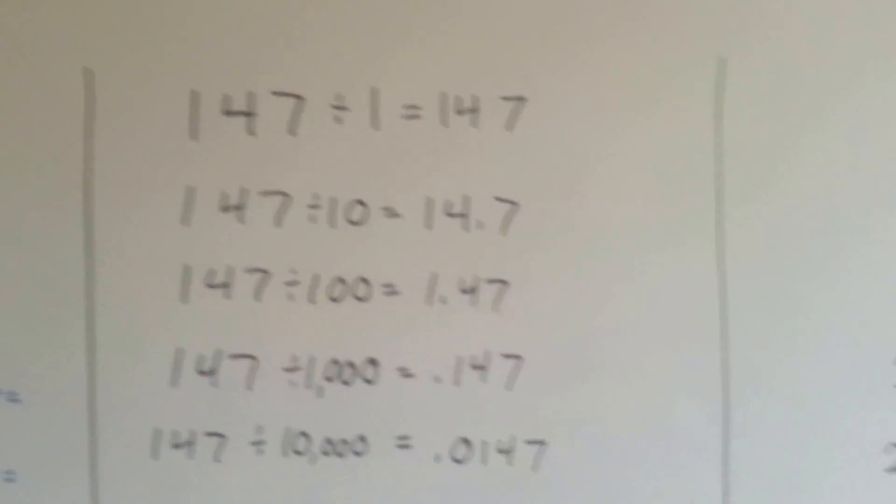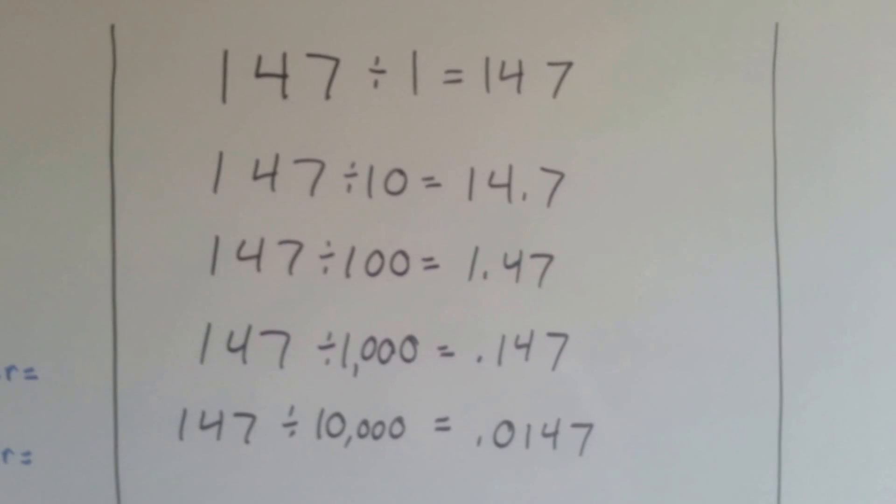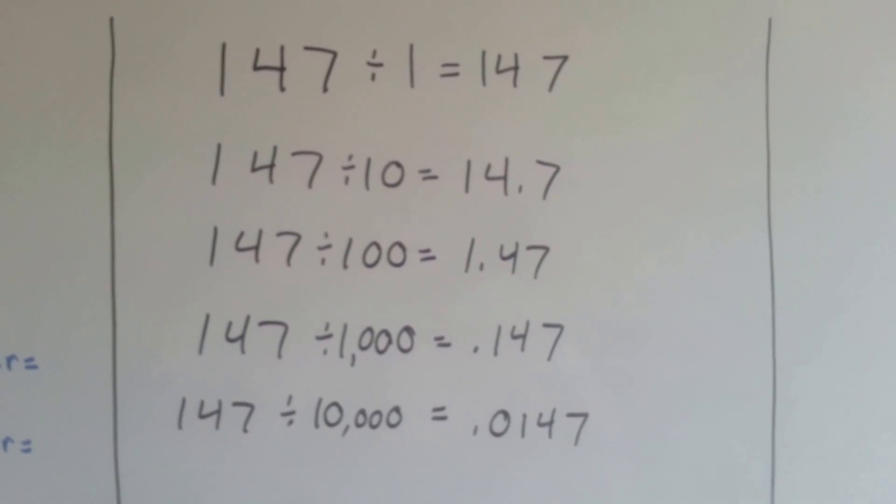So here's some more examples. 147 divided by 1 is 147. 147 divided by 10, the decimal place now moves between the 4 and the 7.